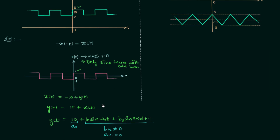This is a shortcut method to obtain the correct option in objective questions — there is no need to obtain the Fourier series expansion using the conventional method. Understanding of symmetries will save you time in your examination. Now we will move to the second example.